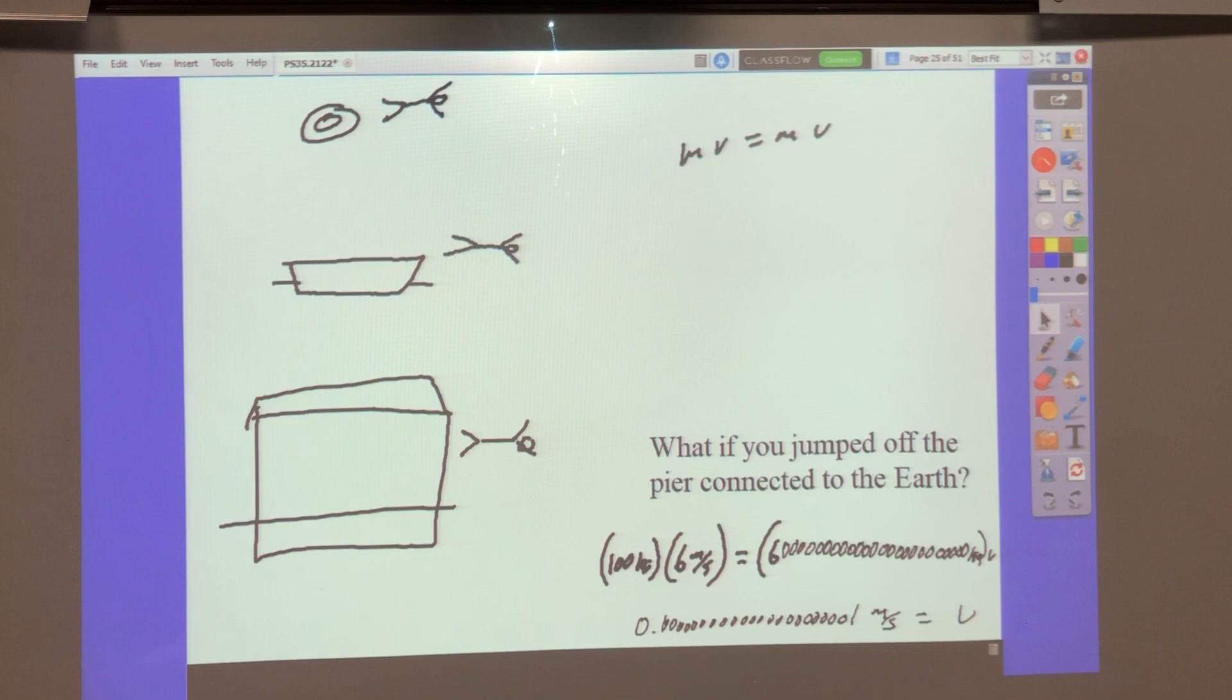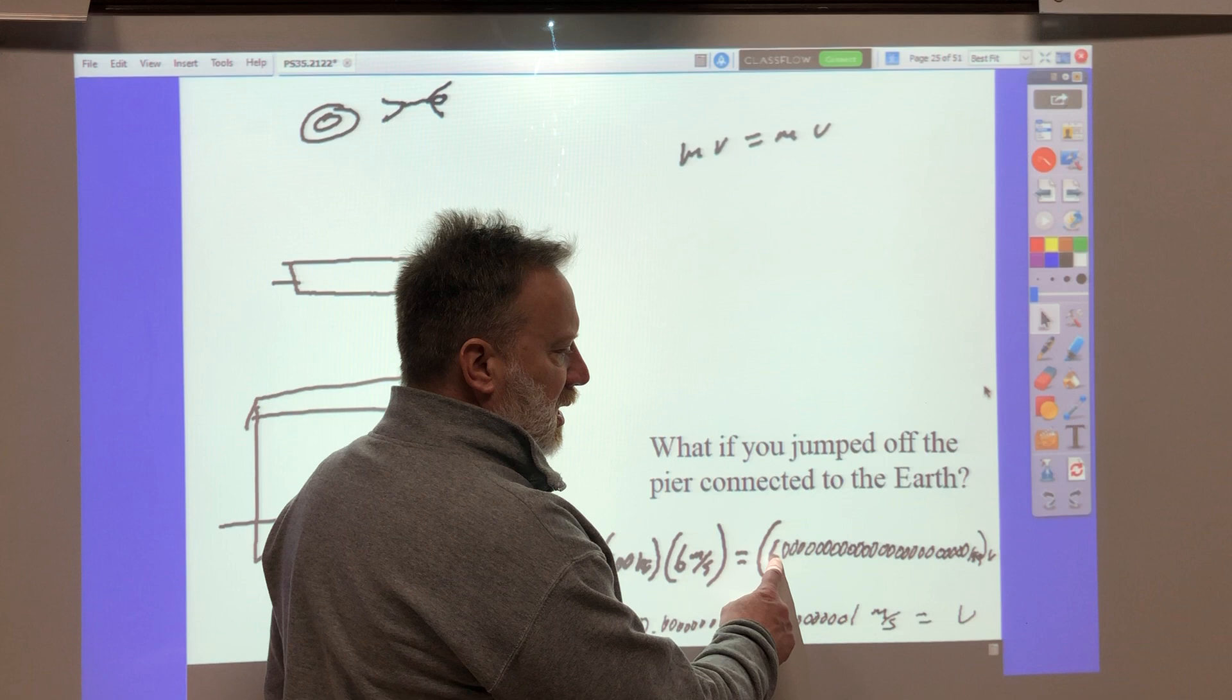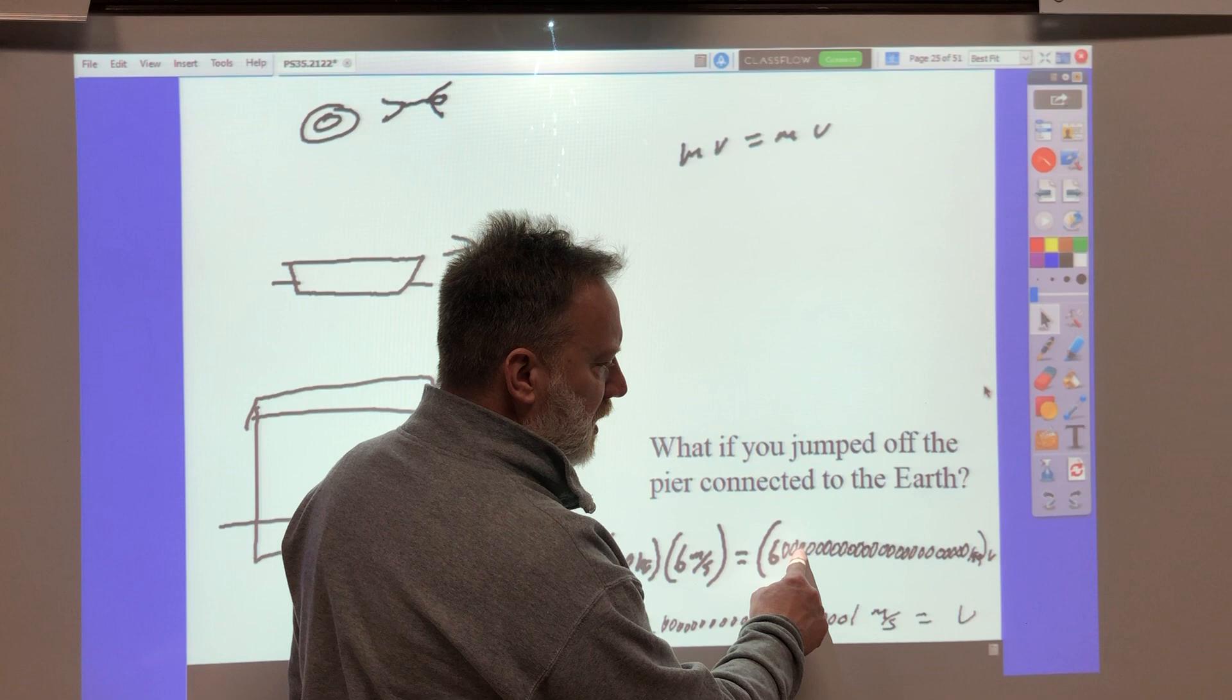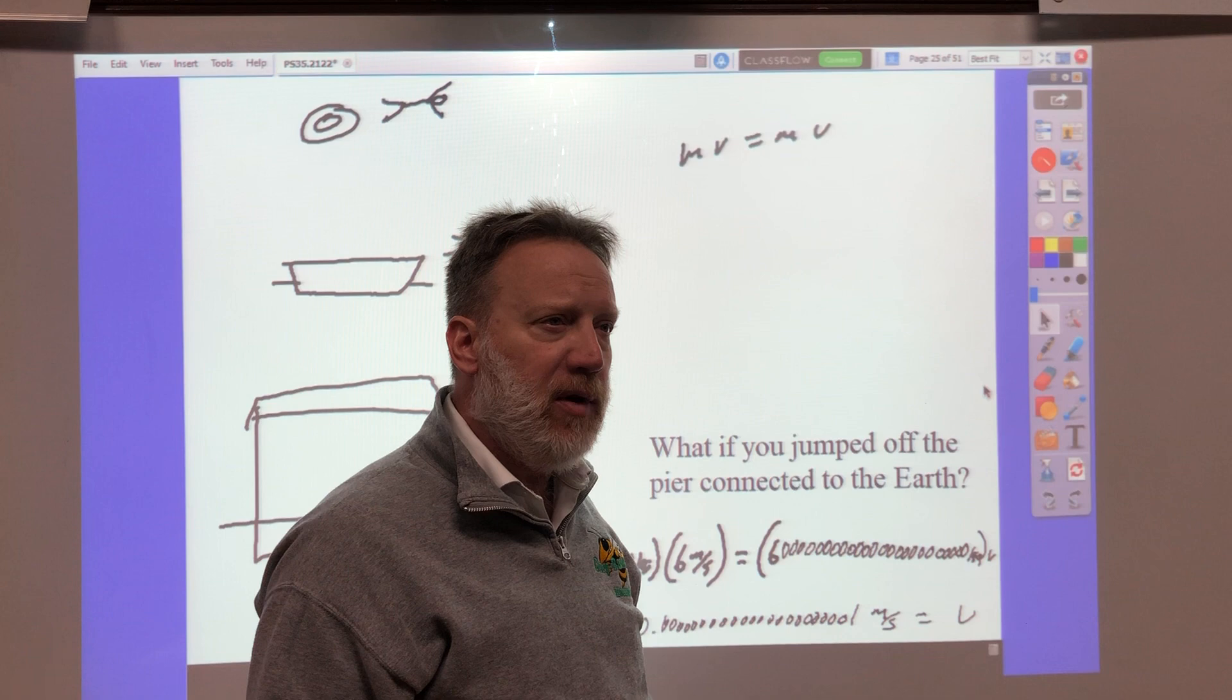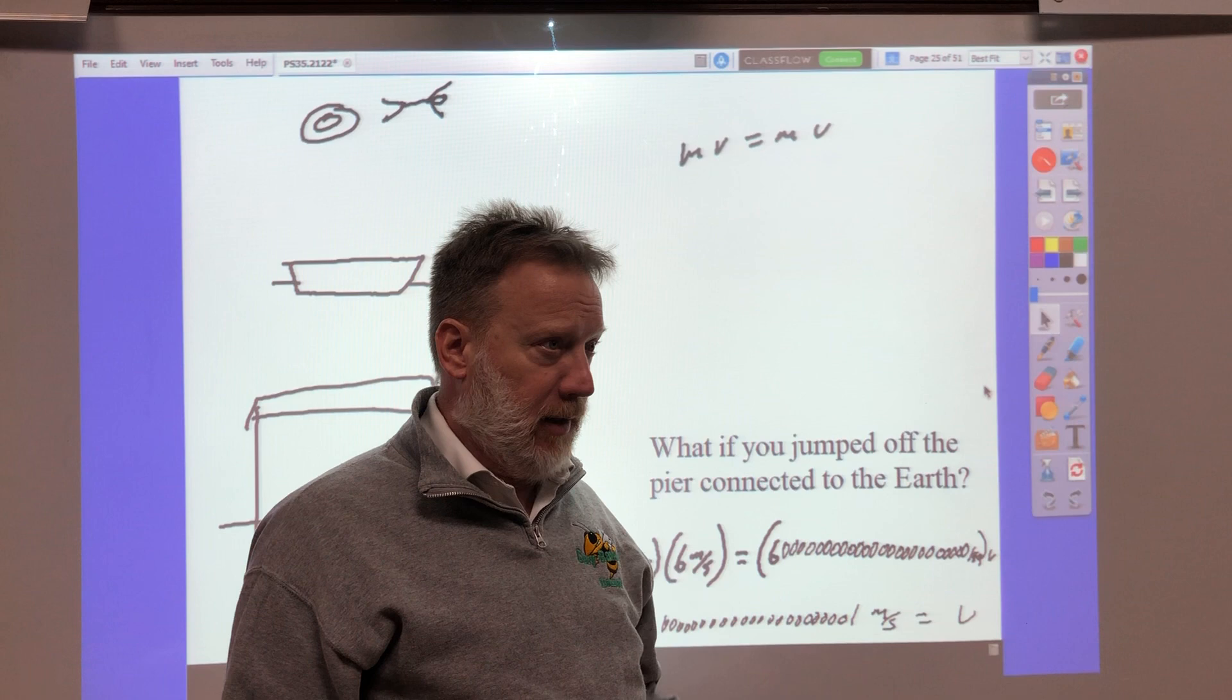Now, what happens if you get a really, really, really, really, really massive object, like the Earth? The Earth has a mass of about six, followed by 24 zeros, kilograms. Six, zero, zero, zero, zero, that's a whole bunch of kilograms. The Earth is huge. That mass is huge. When you jump off the Earth, does it go the other way?